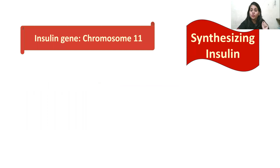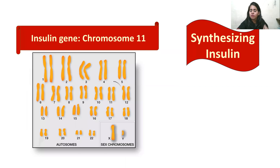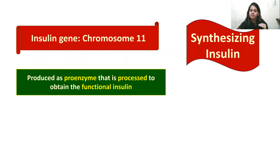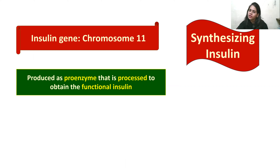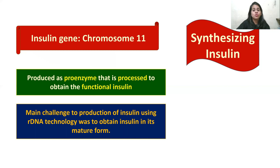Who synthesizes insulin in our body? It is chromosome 11 — chromosome 11 has the insulin gene and helps in the formation of insulin in our body. This is produced as a pro-enzyme that is processed to obtain the functional insulin. The main challenge in producing insulin by DNA technology was to obtain insulin in its mature form — that is, having only the two chains A and B.